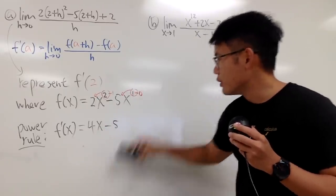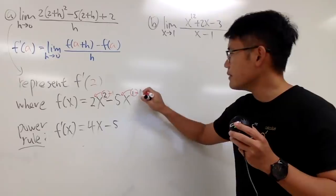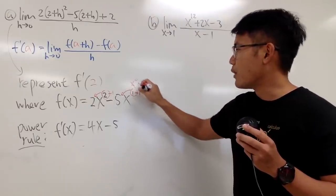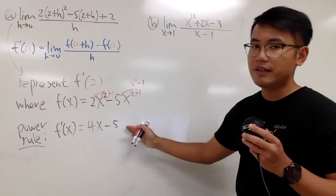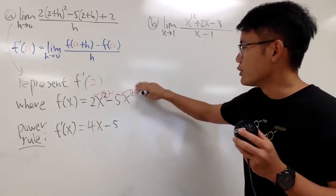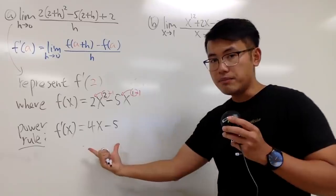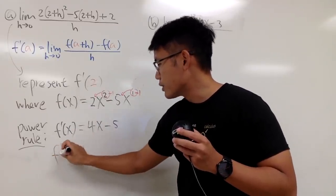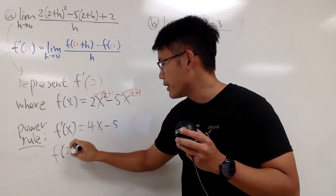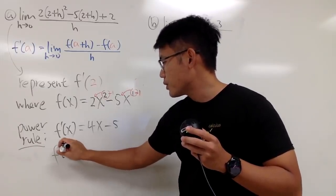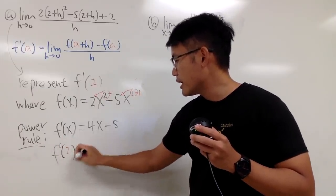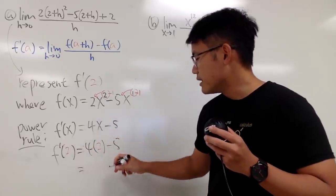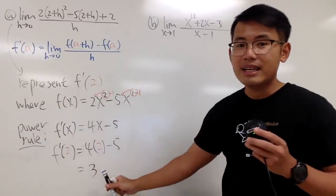That will give you the derivative for the first part. And then next, you see this is 5x to the first power. You do the same thing. You bring the power to the front, and then you do negative 5 times 1, which is just minus 5. And then, don't forget, you have to minus 1 to the exponent. And then, 1 minus 1 is, of course, 0. x to the 0's power is just 1, so you don't have anything here anymore. So, you just have that for your derivative function.